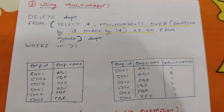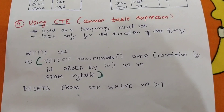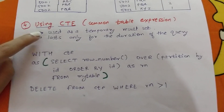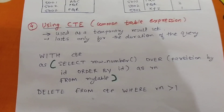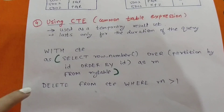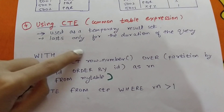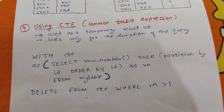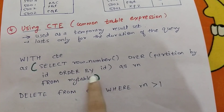The fourth way is by using CTE — Common Table Expression. A CTE is used as a temporary result set and it lasts only for the duration of a query. You can think of it as a temporary table that only lasts for the duration of the query. This is very similar to the above query. We write: WITH cte AS (SELECT ROW_NUMBER() OVER (PARTITION BY id ORDER BY id) AS rn FROM my_table).